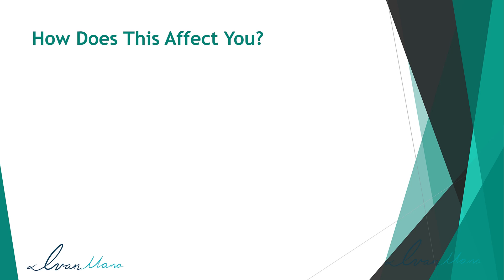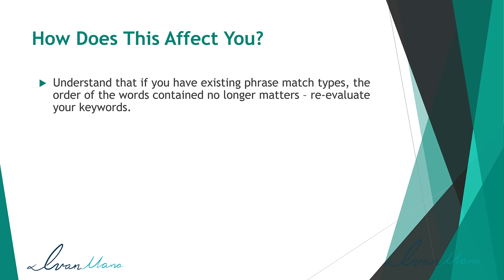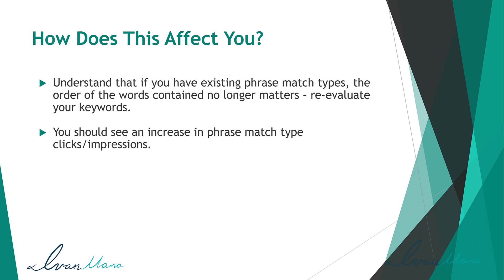So how does this affect you? If you have existing phrase match types, the order of the words in that keyword will no longer matter. Make sure to go through your list of keywords and ensure they are the way you want them to be. If the order of the keywords definitely matters for some of your phrase match types, you might want to add negative keywords to make sure your ads don't show up for customers typing the words in opposite order. You can also expect an increase in phrase match type clicks and impressions, because now the order no longer matters — as long as your keywords are in the search term, your ads will show up.